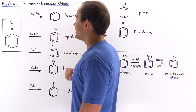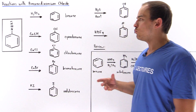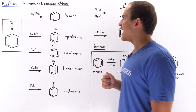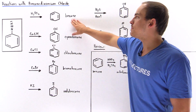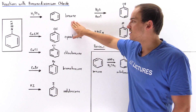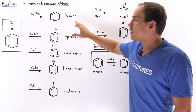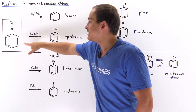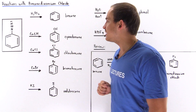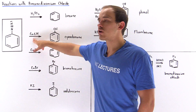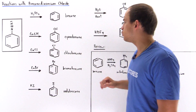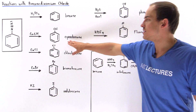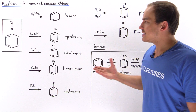If we take benzene diazonium and react it with hypophosphorous acid, we produce the benzene molecule. If we take the benzene diazonium and mix it with copper cyanide, we produce cyanobenzene, as shown in this diagram.